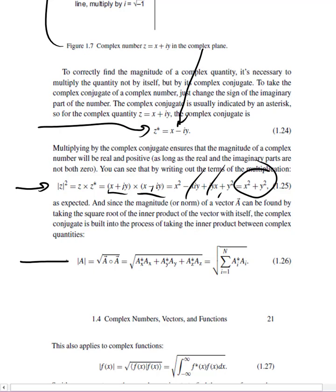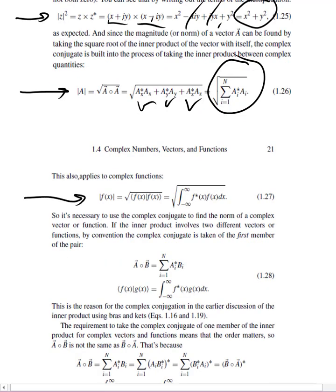The same thing works for vectors. Here's the magnitude of vector a — notice we don't just multiply ax by ax, ay by ay, and az by az; we take the complex conjugate before we do that multiplication. This gives us the norm of vector a. Same thing for functions: here's the magnitude or norm of function f. Notice this is an inner product — we take the complex conjugate of the first member. Then we integrate and take the square root; that's the norm of f.